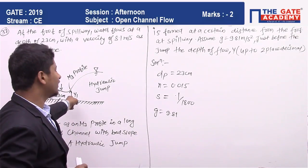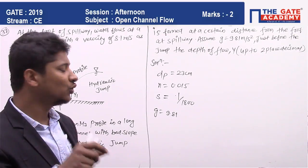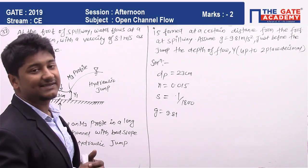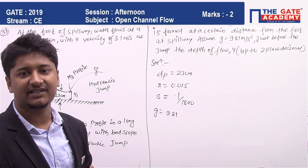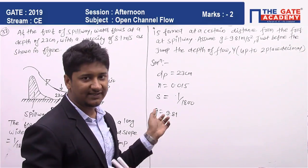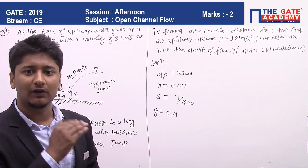If discharge is the same at this point, you can calculate the velocity because n is given and S (slope) is given. You can use Manning's equation formula. This is the approach to solve this question.